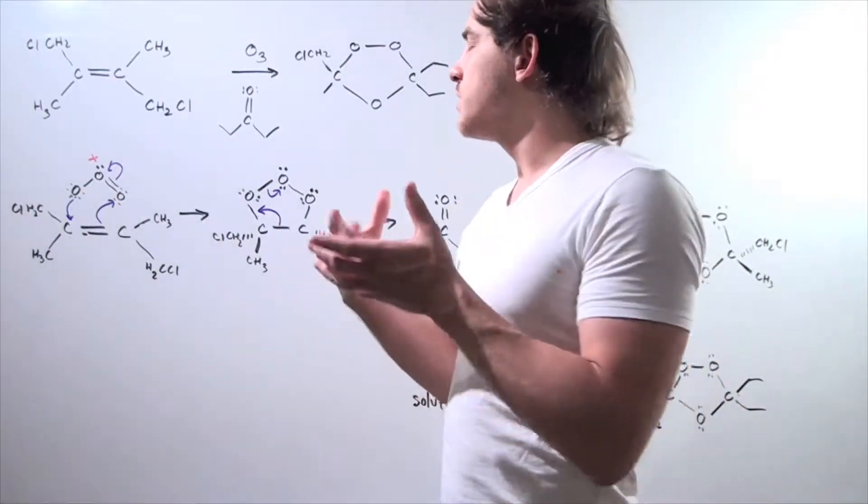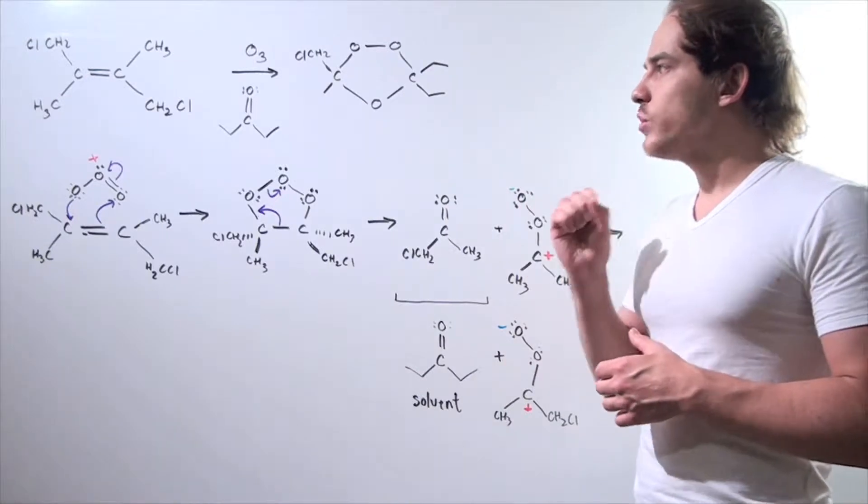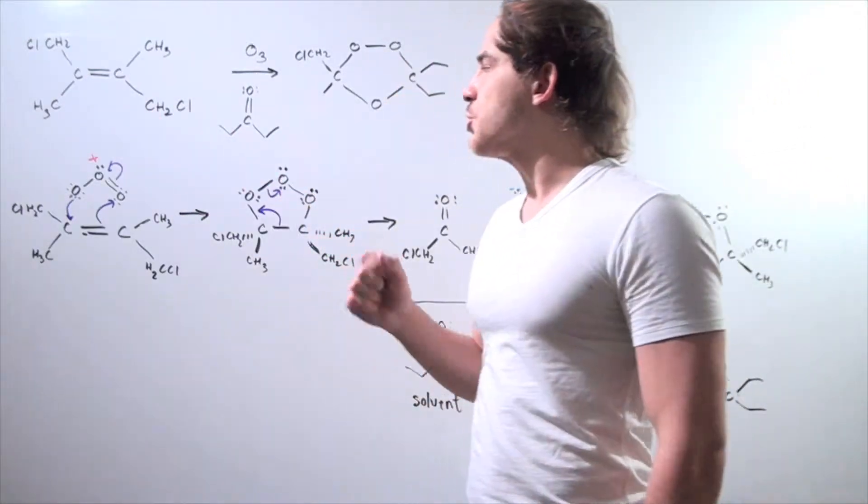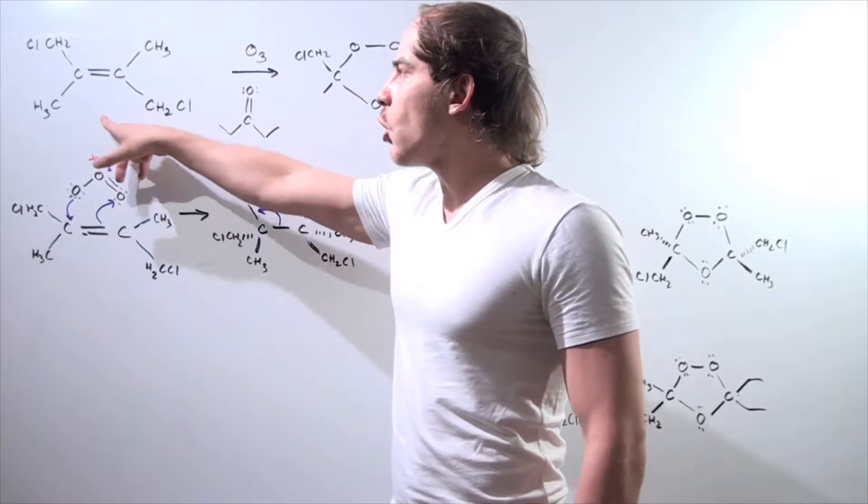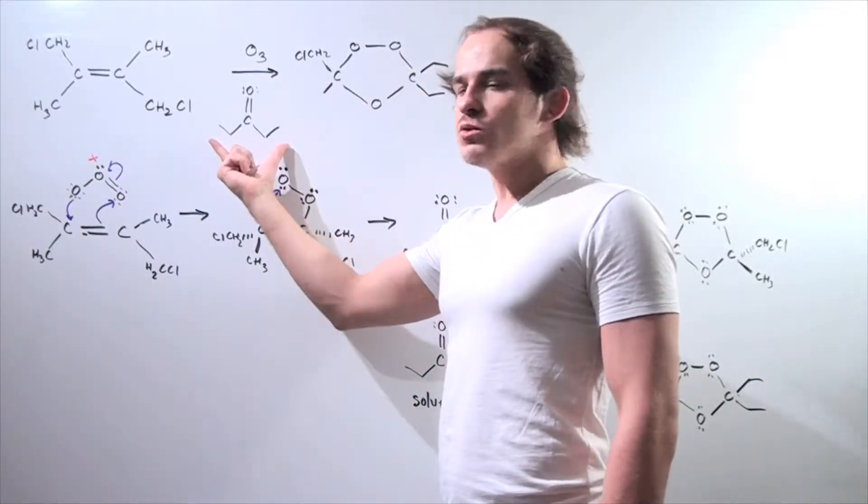So in this example we're going to continue discussing ozonolysis. Now let's suppose we're given the following reagents. We're mixing the following starting materials with these two reagents. So this is our ketone solvent and this is our ozone molecule.